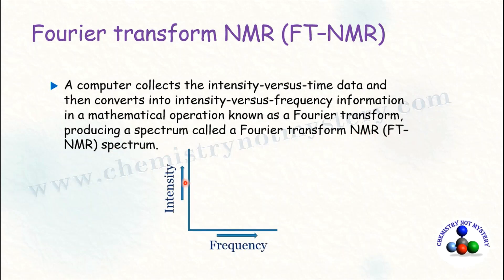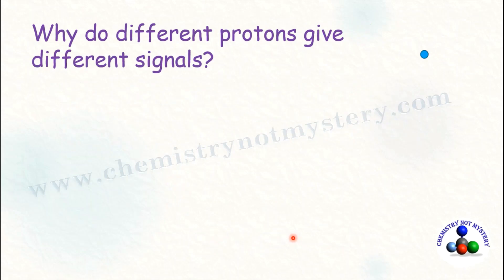In the FTNMR spectrum, intensity is plotted on the y-axis and frequency is plotted on the x-axis.